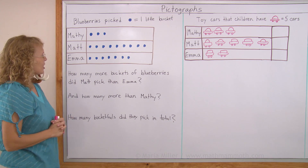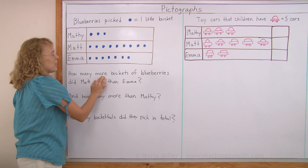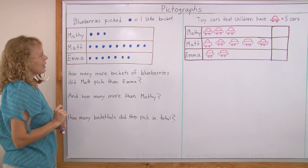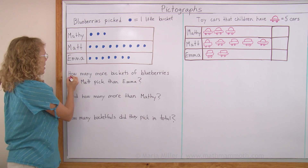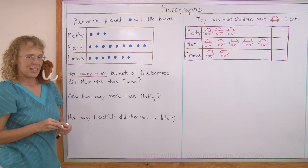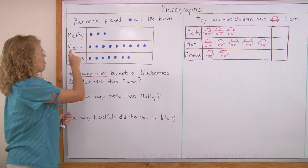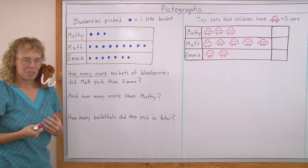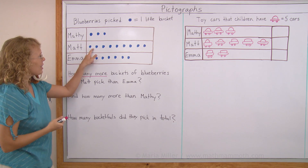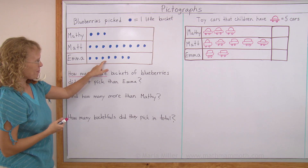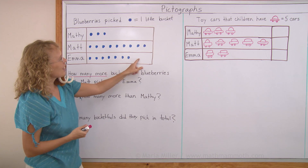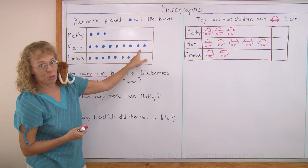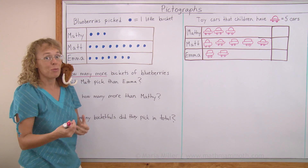Here are some questions for us to solve. How many more buckets of blueberries did Matt pick than Emma? We are looking at Matt and Emma. You can see it easily here in the graph — Matt has two more of these blueberries, meaning two more bucketfuls.